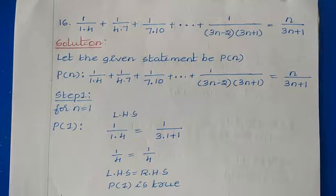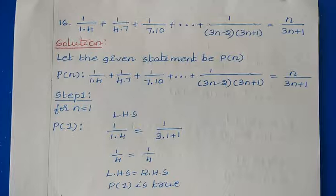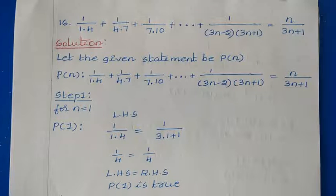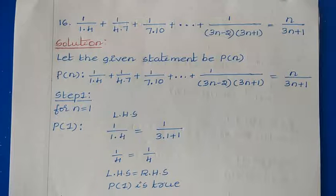Question number 16: 1/(1×4) + 1/(4×7) + 1/(7×10) + ... + 1/((3n−2)(3n+1)) = n/(3n+1).